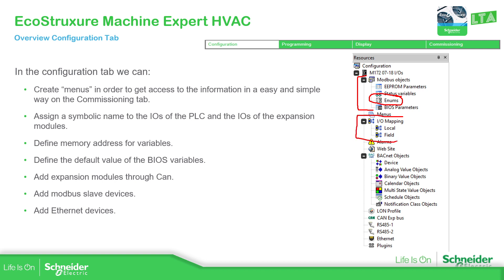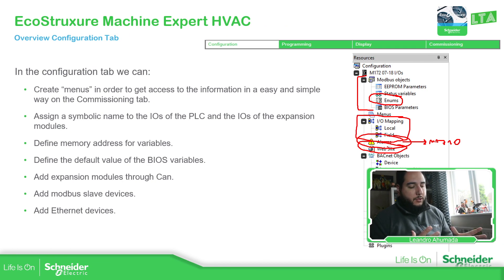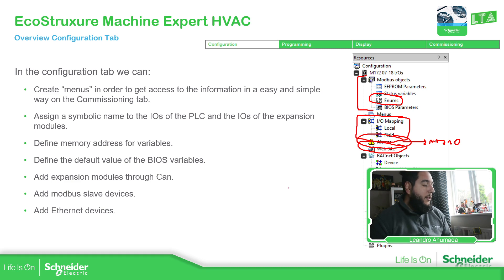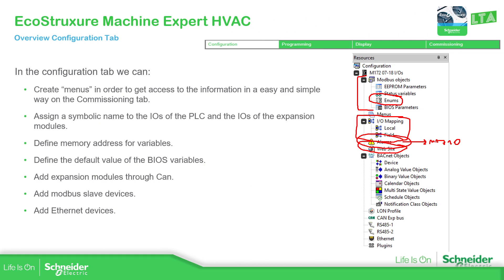Then we have IO Mapping. The information in IO Mapping depends on the hardware selected, but basically covers the IOs of the controller and the expansion modules. We also have the possibility for alarms, which is more related to the M171 optimized. Then there's the possibility to use the website — it's similar to web visualization but in a different way, which we'll cover later. And then we have backend objects and other elements regarding communication, all of which will be covered later.